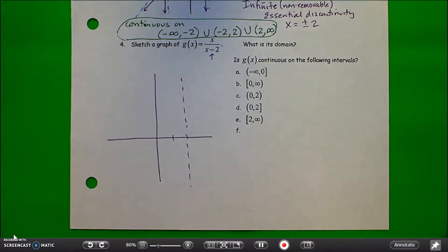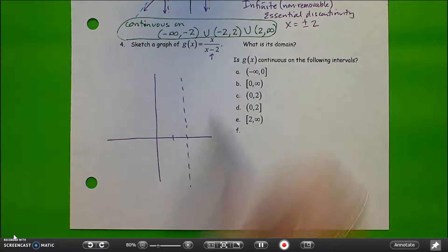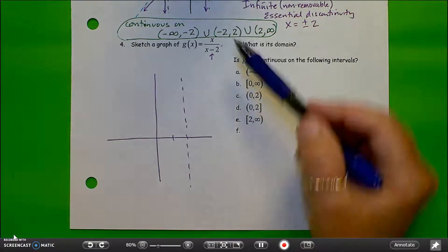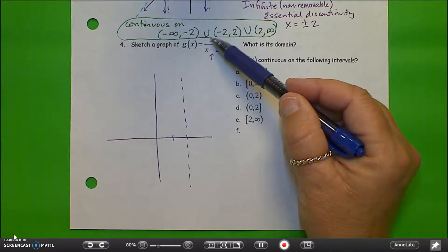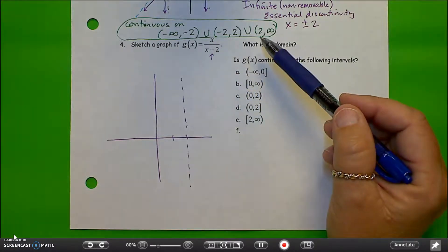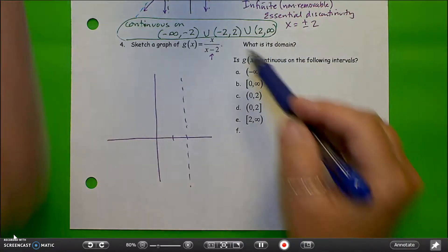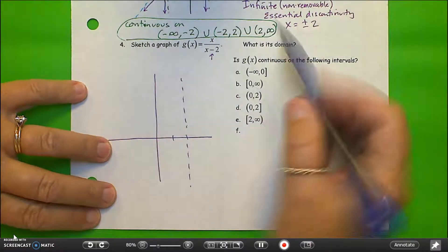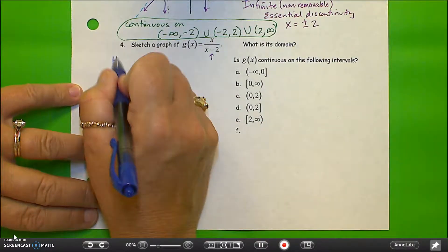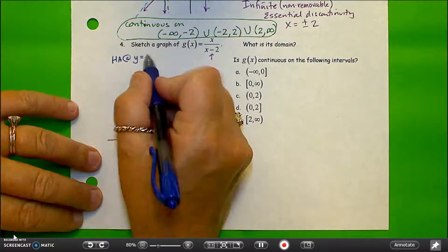What other features of the graph might we know about? We can find horizontal asymptotes by looking at the limit as g of x goes to positive and negative infinity. In that process, we're comparing the powers of the numerator and denominator — these are the same. So with equal powers, the limit as x approaches positive or negative infinity is simply the fraction of the leading coefficients, and it creates a horizontal asymptote at y equals 1.